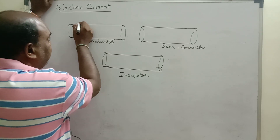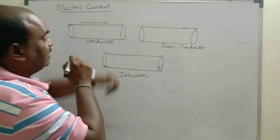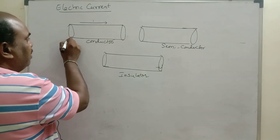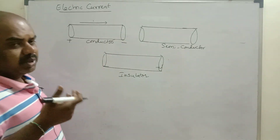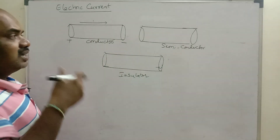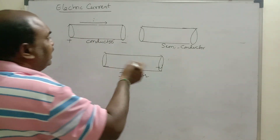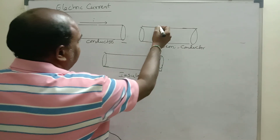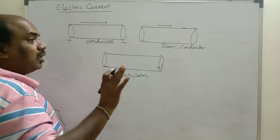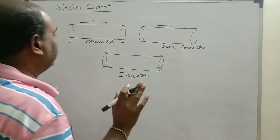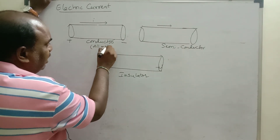Conductors means which allows current freely. This is the direction of current. We know that current always flows from higher potential to lower potential. We will see what is potential, how current flows, what is the direction of electric field, and what is the direction of current. In an insulator, current does not flow. Example for conductors: all metals are good conductors.